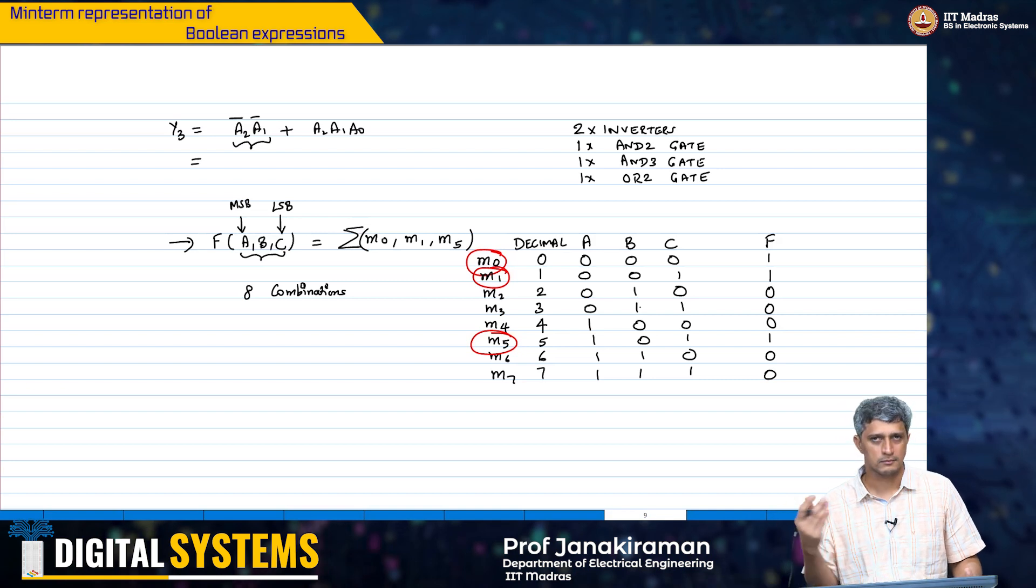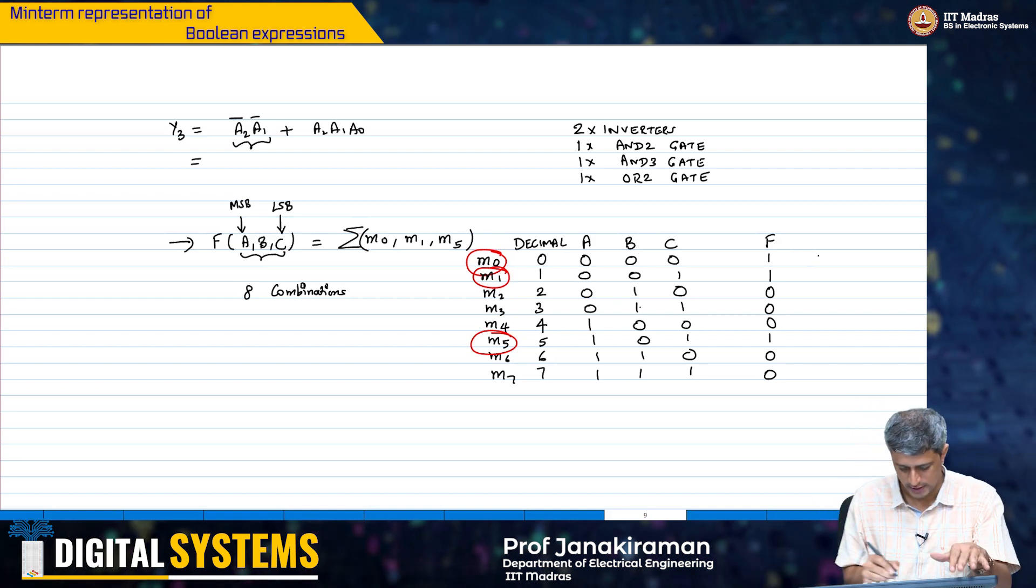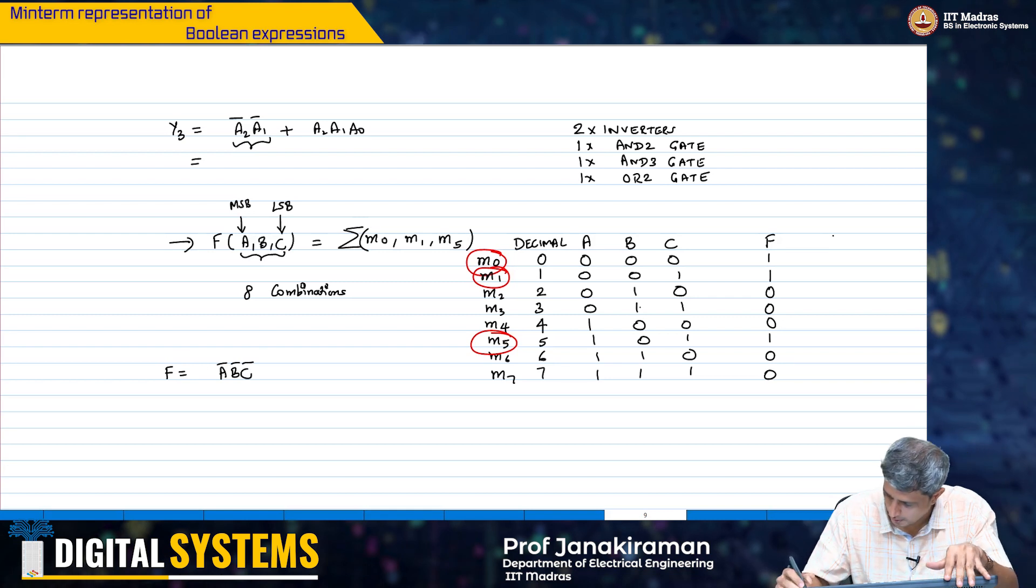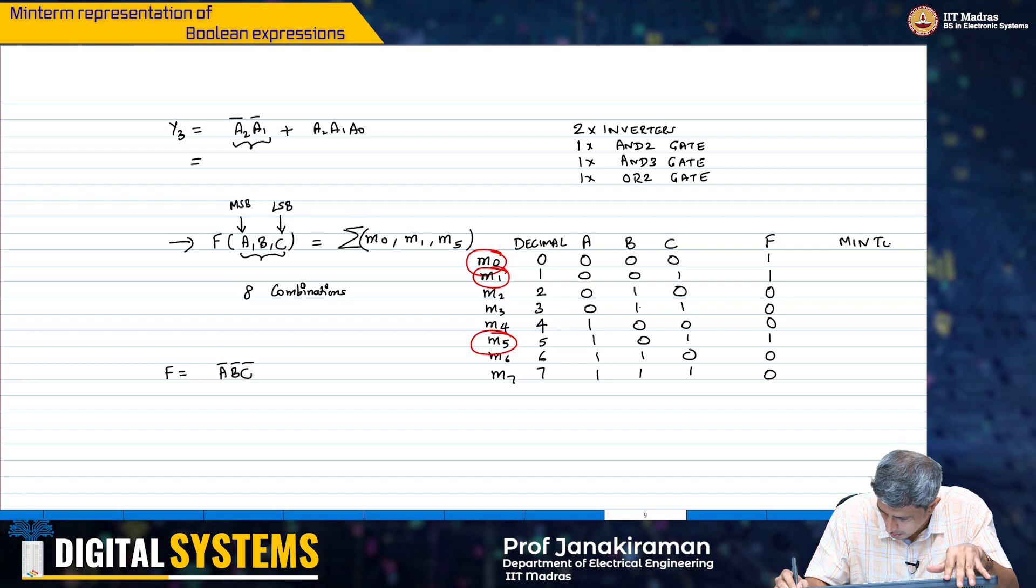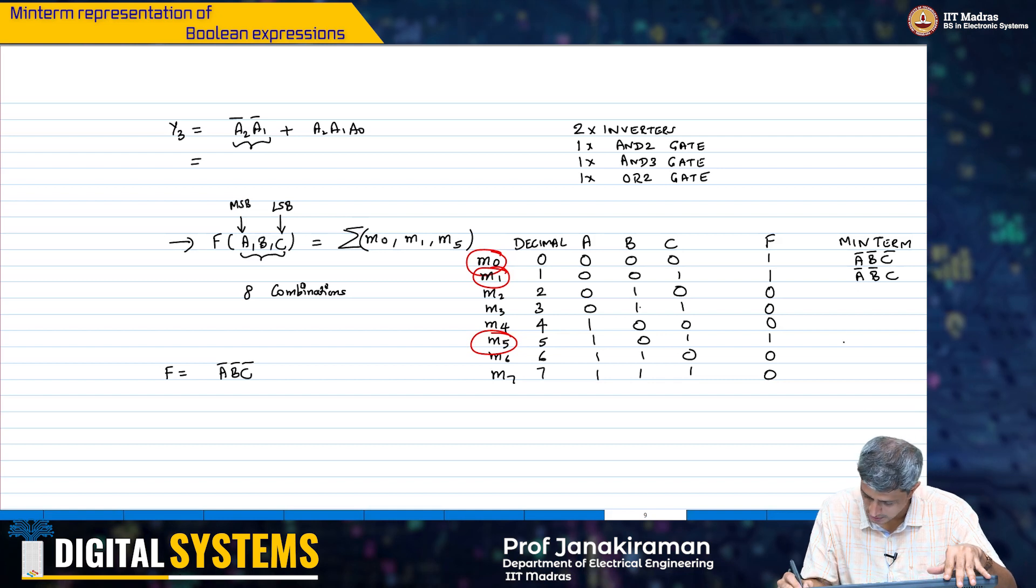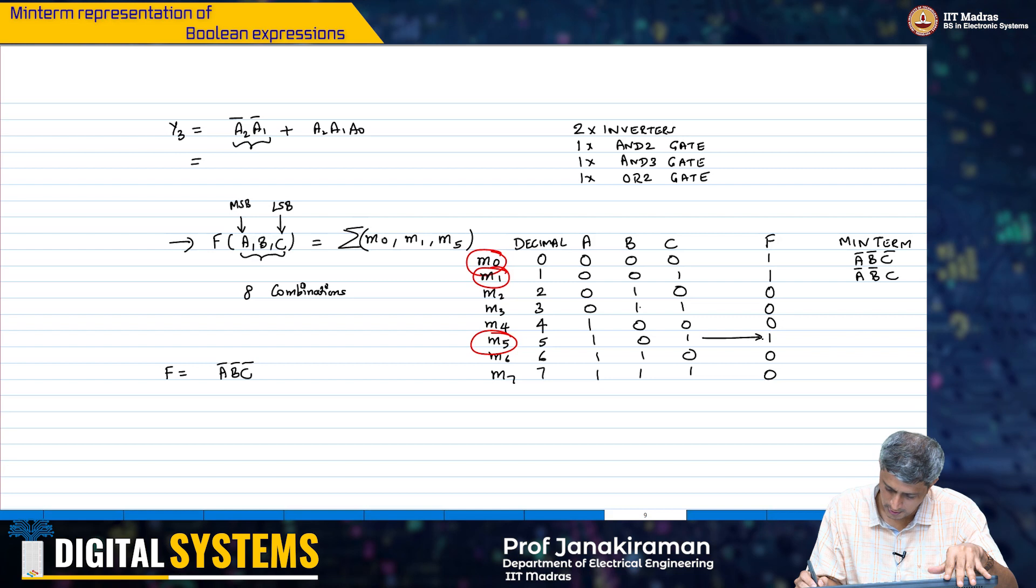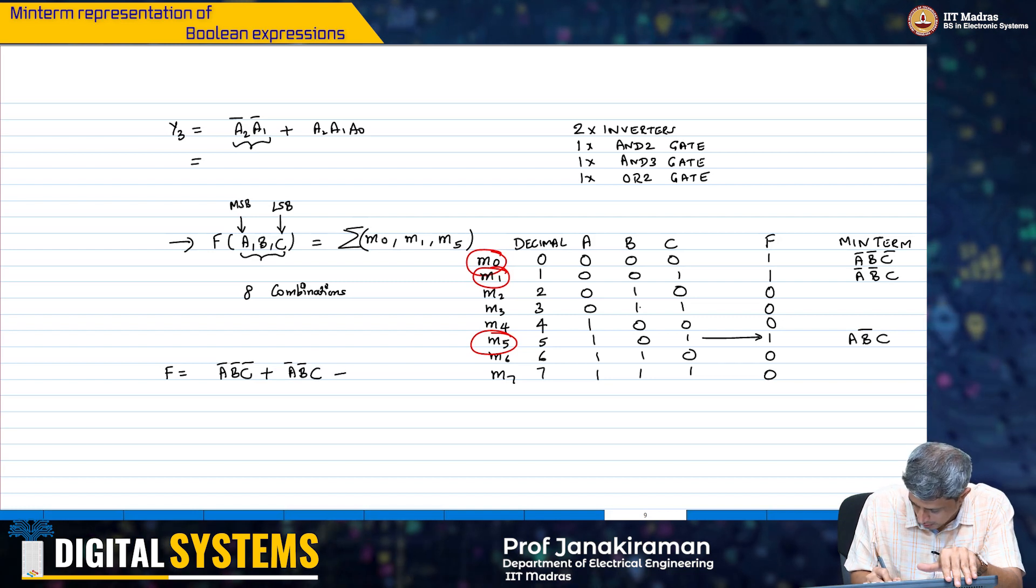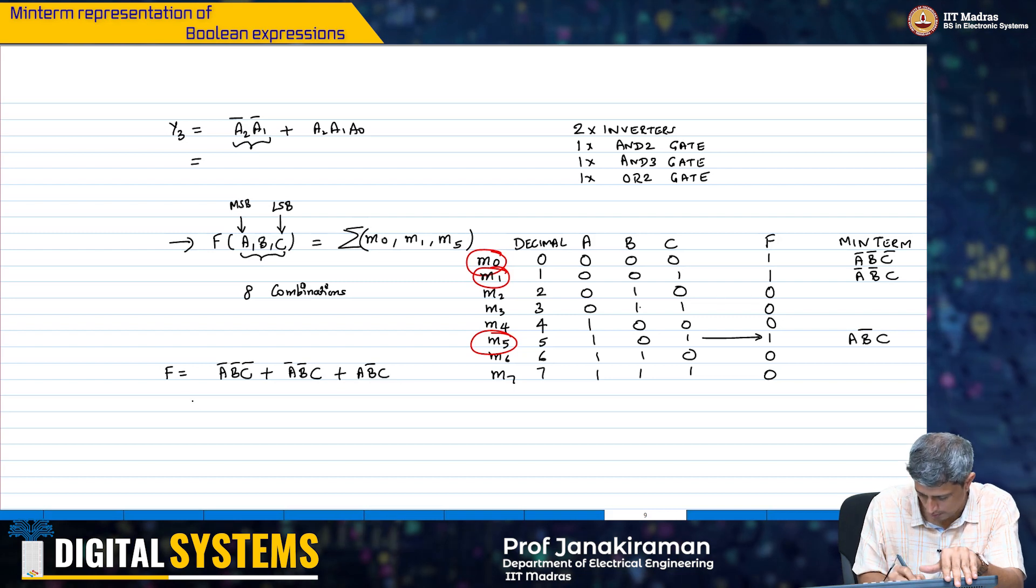So now what is the final Boolean expression for f? You can simply look at this. It is going to be f is equal to a bar b bar c bar. So, the min term I will write here: a bar b bar c bar, a bar b bar c, and then this one is a b bar into c.